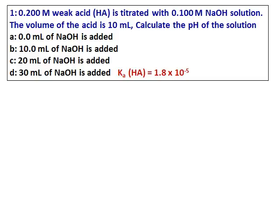The question is: 0.200 molar weak acid is titrated with 0.100 molar NaOH solution, and the volume of the acid is 10 milliliters. Calculate the pH of the solution at 4 different points: A — 0 mL NaOH added; then 10 mL, 20 mL, and 30 mL NaOH added.